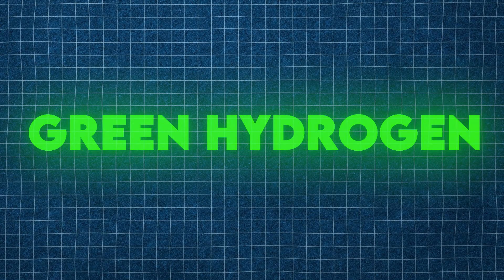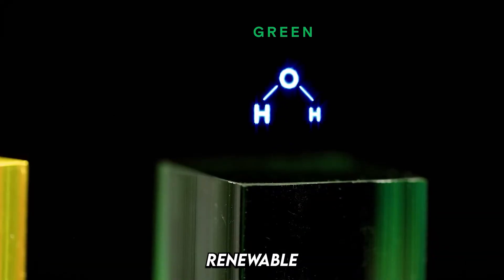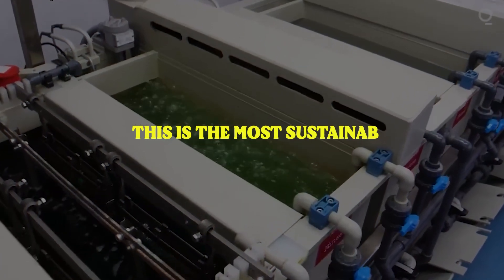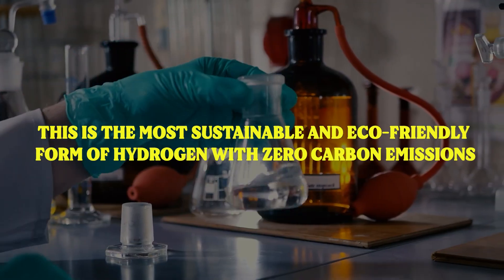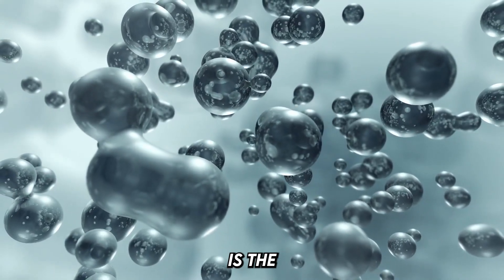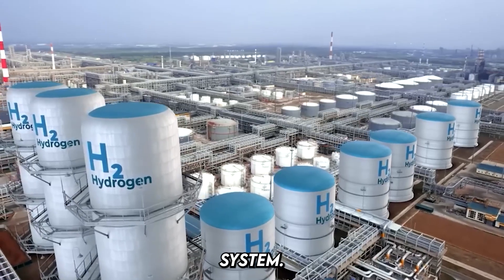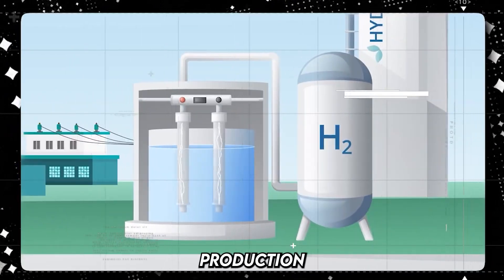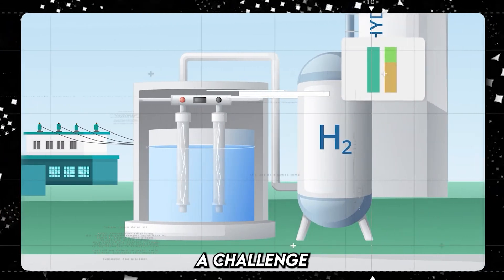Green hydrogen is produced through electrolysis using renewable energy sources like wind or solar power. This is the most sustainable and eco-friendly form of hydrogen with zero carbon emissions. Green hydrogen is the ultimate goal for a zero carbon energy system. However, its production is currently expensive, making it a challenge to scale up.